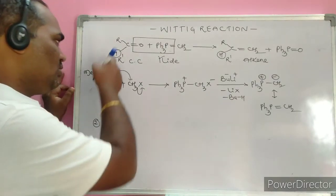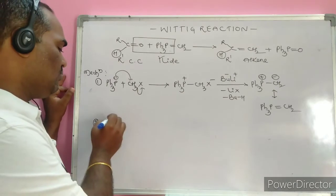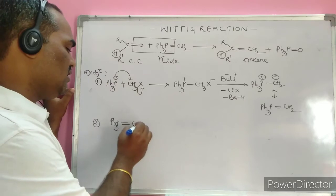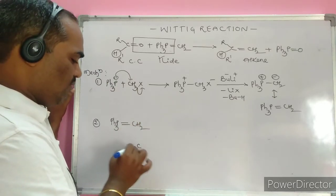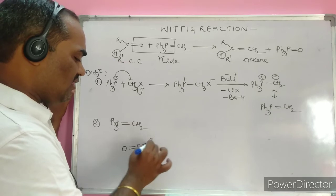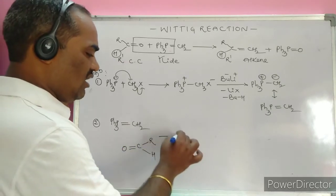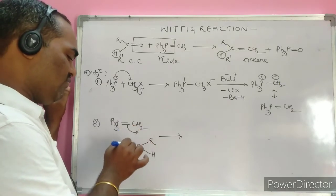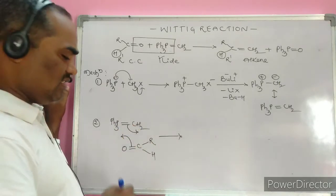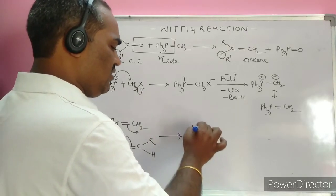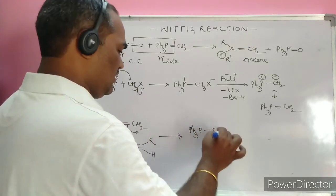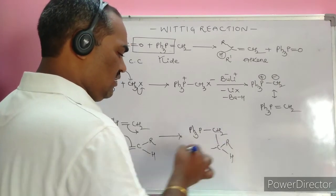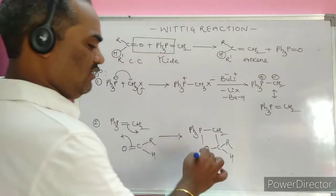In step two, the ylide Ph₃P=CH₂ interacts with the aldehyde or ketone — whichever carbonyl compound it may be. A cyclic transition state is formed as electrons move in a [2+2] addition: the P=C double bond becomes a single bond and the C=O double bond becomes a single bond, giving a four-membered oxaphosphetane intermediate.